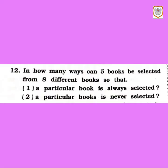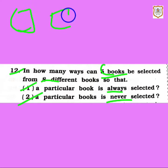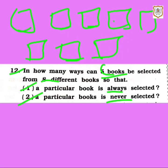Let's read sum number 12: in how many ways can 5 books be selected from 8 different books such that (a) a particular book is always selected, and (b) a particular book is never selected. So there are total eight books, out of which five books are to be selected. The first condition is a particular book is always selected. Suppose there are eight different books — one, two, three, four, five, six, seven, eight.